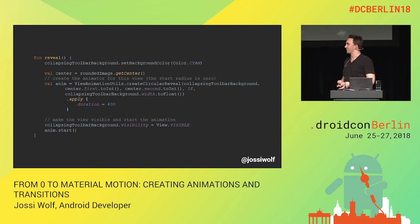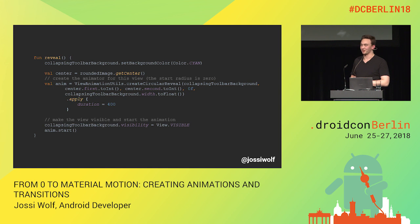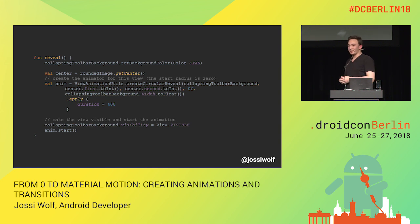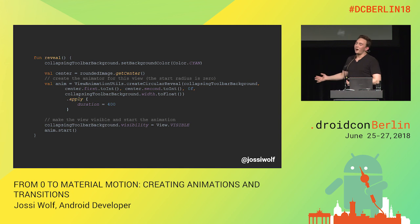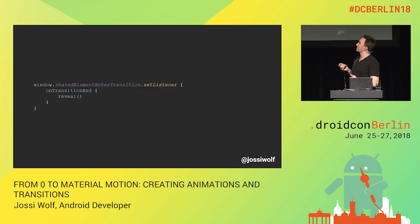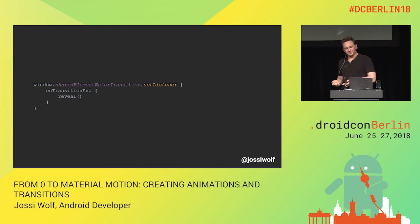Almost done — because it's a shared element transition, you shouldn't use a stopwatch to measure when it completes. Your animation may work fine on the newest Pixel, but on a device like a Moto G6, animations can take longer and you'd be off by 50 milliseconds, making it look jarring. So you want to set a listener for the shared element enter transition, and only when the transition has actually ended, then call the reveal function.